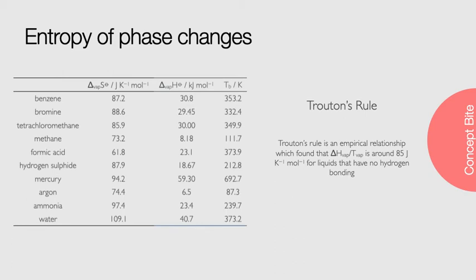Other molecules, such as methane, also show this same deviation. Methane shows this lower-than-expected entropy of vaporization because it has a small moment of inertia, and consequently a large rotational constant B, corresponding to large spacing of rotational energy levels, and from our Maxwell-Boltzmann distribution, only a small population of molecules in excited rotational energy levels, and consequently a relatively low entropy of the gas phase. You will learn more about rotational constants in another part of this course.